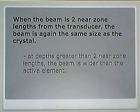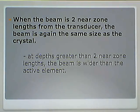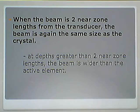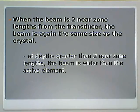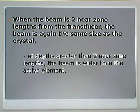Anything past those two near zone lengths — remember, in the far field, the beam diverges — so anything past that, the beam diameter is wider than the active element. It just goes on and on.